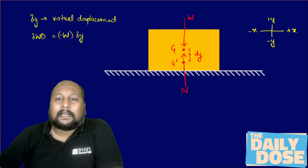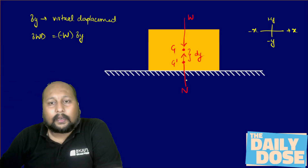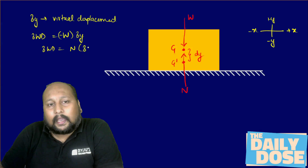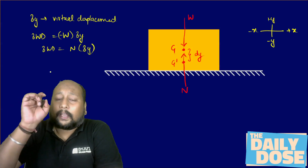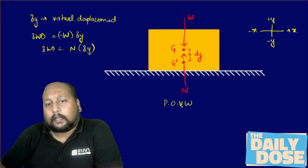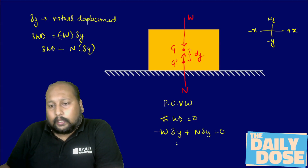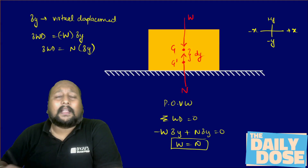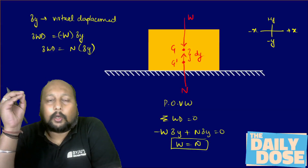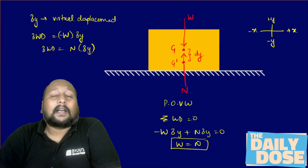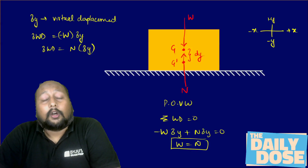Now N is acting upward, so the virtual work done by N is +N·δy. According to the Principle of Virtual Work, the summation of all virtual work done equals zero: −W·δy + N·δy = 0, which gives W = N. This is the same equation we get from the equilibrium condition — weight equals normal reaction. This is the concept of the Virtual Work Principle.